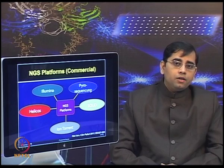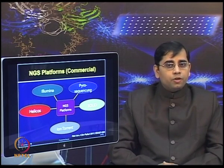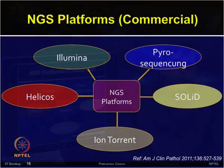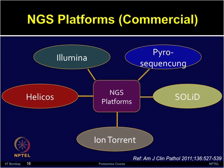Various next generation sequencing commercial platforms are currently available. The Illumina method, which is a flow cell-based method, employs reversible dye termination and uses four-color optical imaging. It is used for whole genome sequencing and is very widely used, but one limitation is low multiplexing capability. Pyrosequencing, or 454 pyrosequencing, is based on a bead-based method with emulsion PCR and CCD light imaging, and is used for targeted exon sequencing. However, contamination risk due to emulsion PCR is one of its limitations.